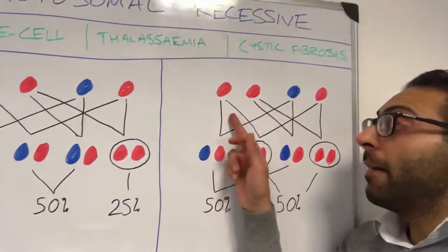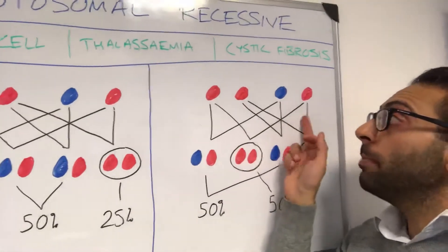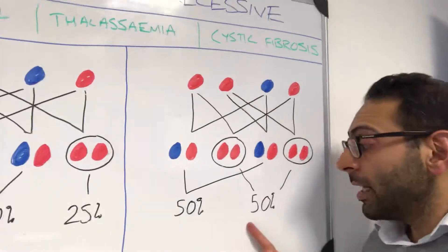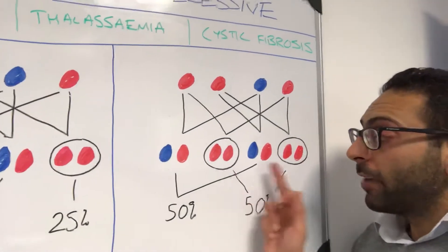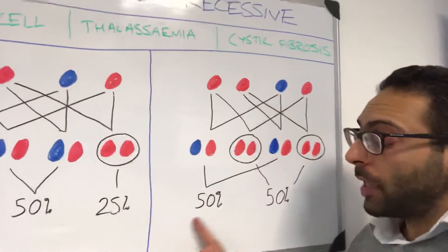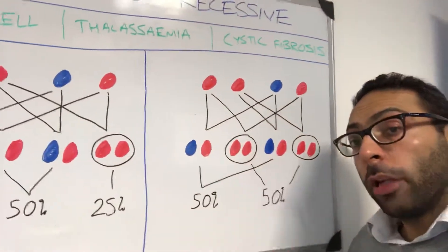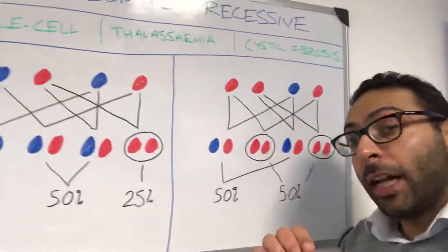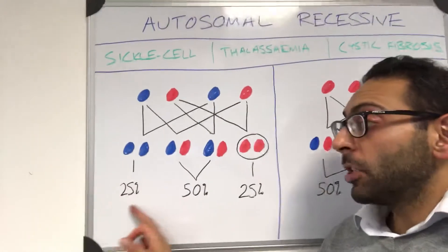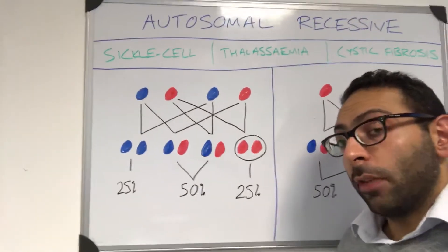In the second example, one parent actually has the condition with two affected genes, and the other parent is a carrier with one affected gene. The child has a 50% chance of having the condition — two in four chances of having both affected genes — and a 50% chance of being a carrier with one affected gene and one normal gene. There is a 0% chance of having nothing to do with the condition, compared to 25% in the first scenario.